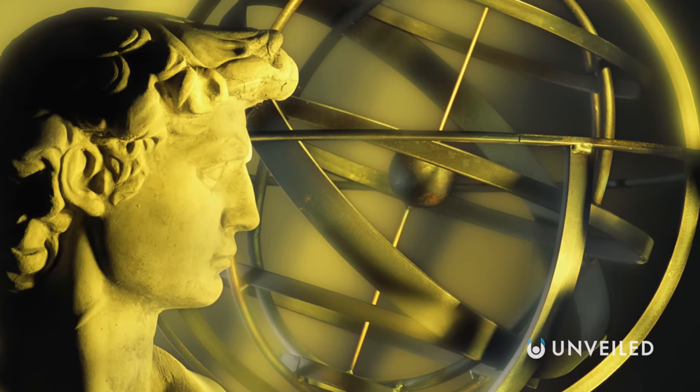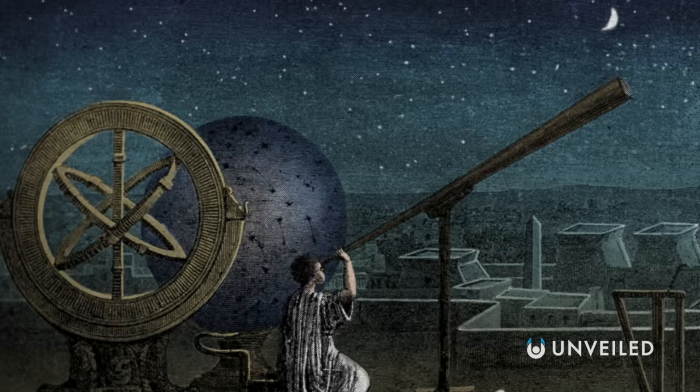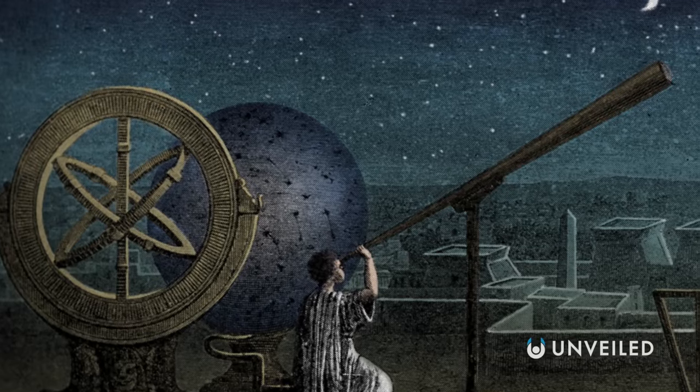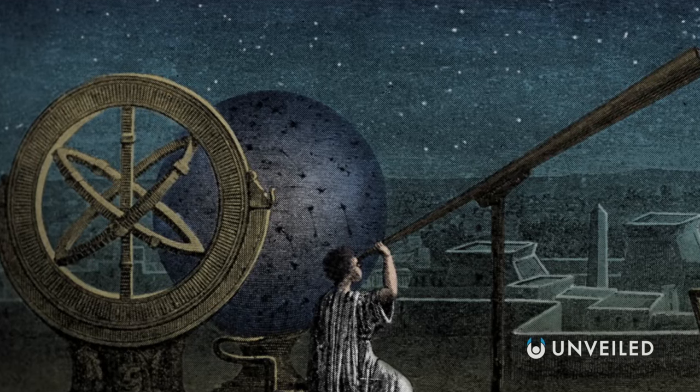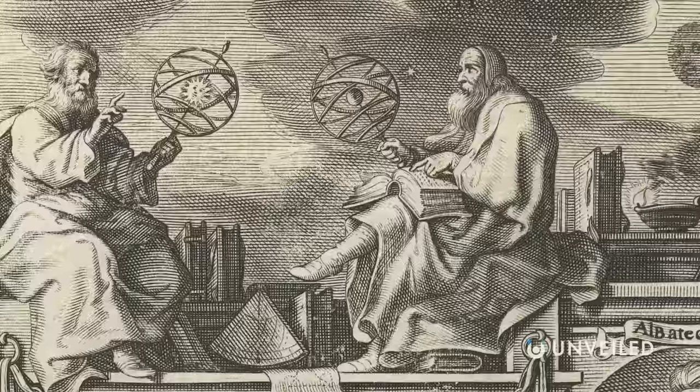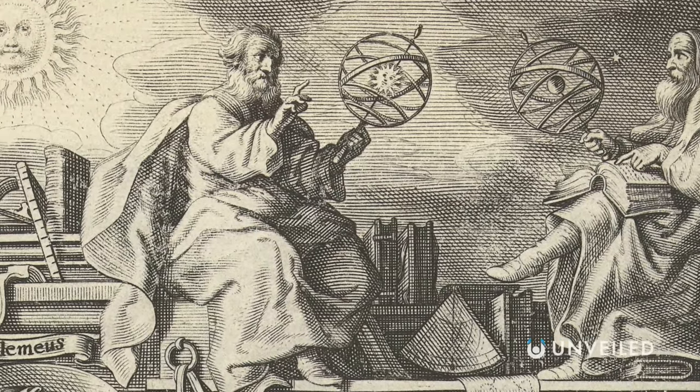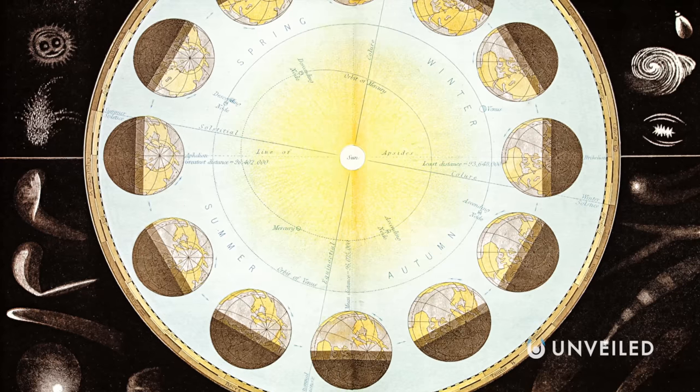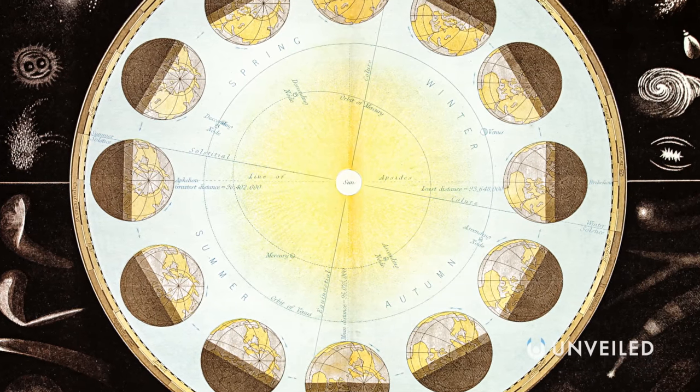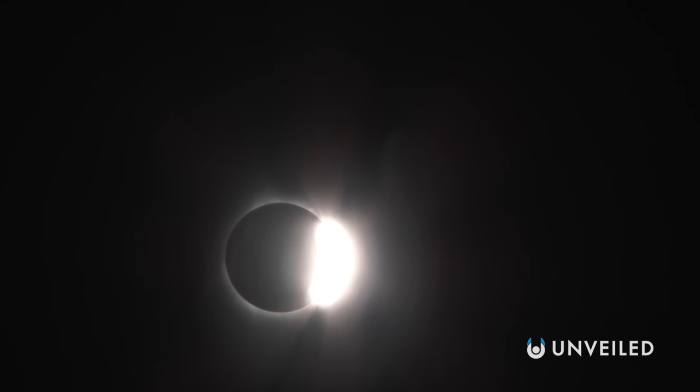By the third century BCE, the Greeks already possessed an impressive knowledge of astronomy. They knew the Earth was spherical and had managed to measure its circumference to a more than reasonable degree of accuracy. Aristarchus of Samos was the first to theorize a heliocentric solar system, and he managed to approximate the distance of the Sun and Moon from the Earth as well. Remarkably, he did this by simply measuring the size of the Earth's shadow on the Moon during a solar eclipse.